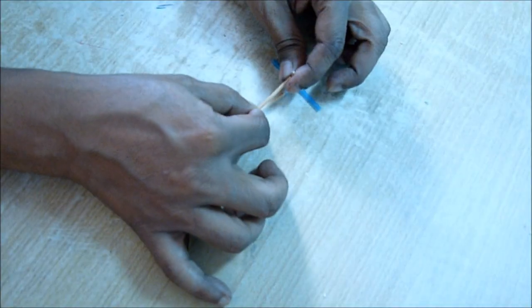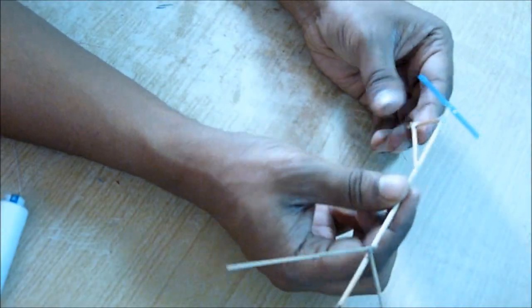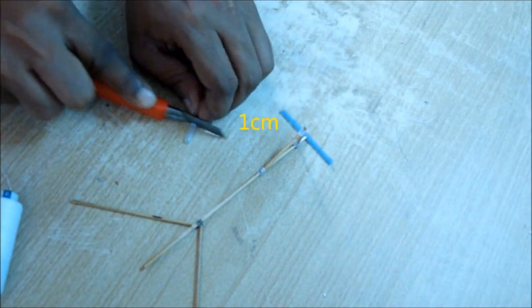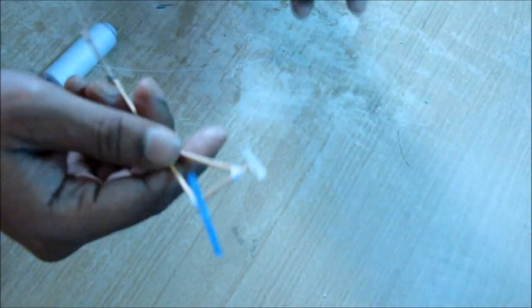Now you need one centimeter long gel pen refill. Put that 90 degrees and tie with the strings. This structure needs to be very strong.